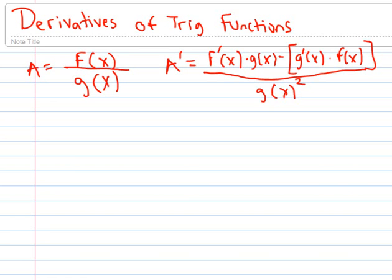The derivative of a will be the derivative of the top function f of x multiplied by the bottom function, subtracted from the derivative of the bottom function times the top function all over the bottom function squared.